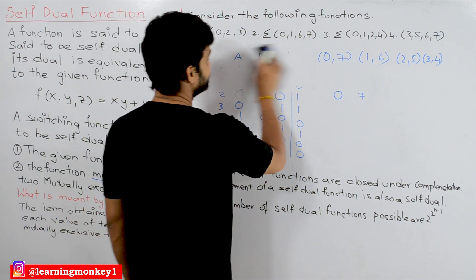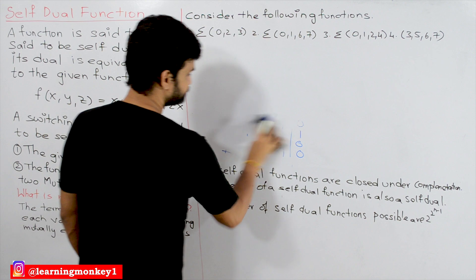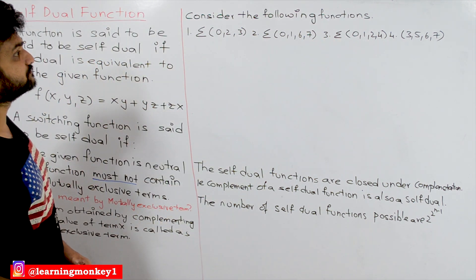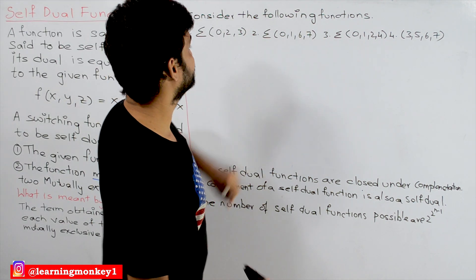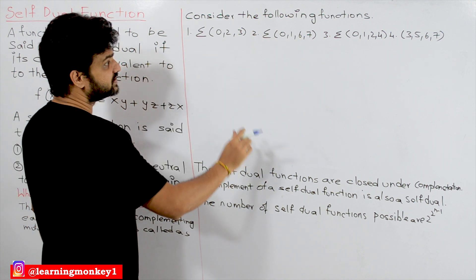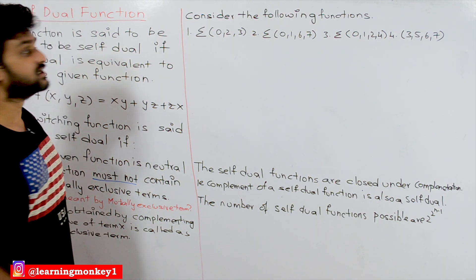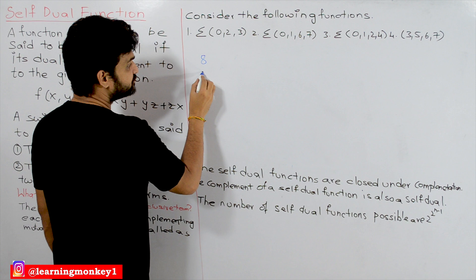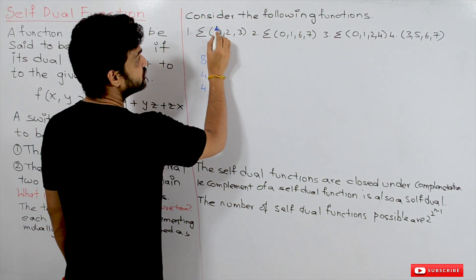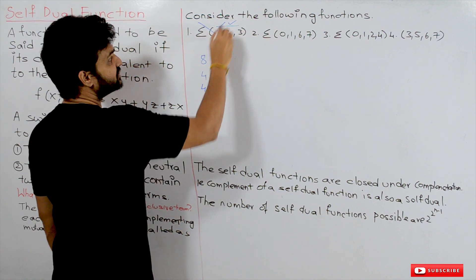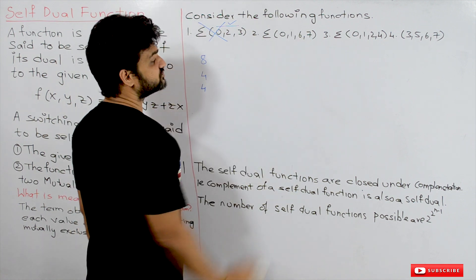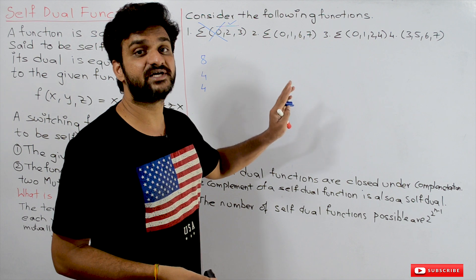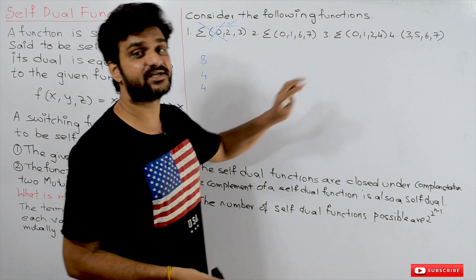We will try to understand this with an example. Consider the following functions — these are three-variable functions. For three variables, the number of possibilities is eight, so there should be four minterms and four maxterms for a neutral function. If a function has only three minterms, it cannot be a neutral function and therefore cannot be self-dual.